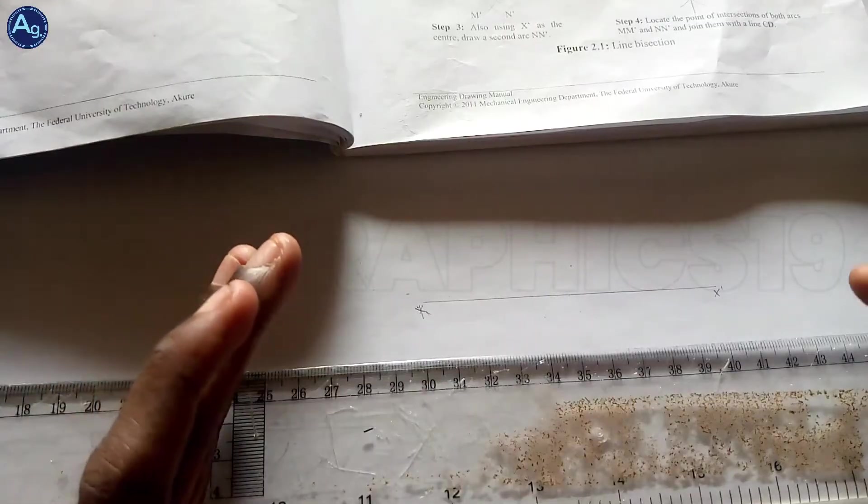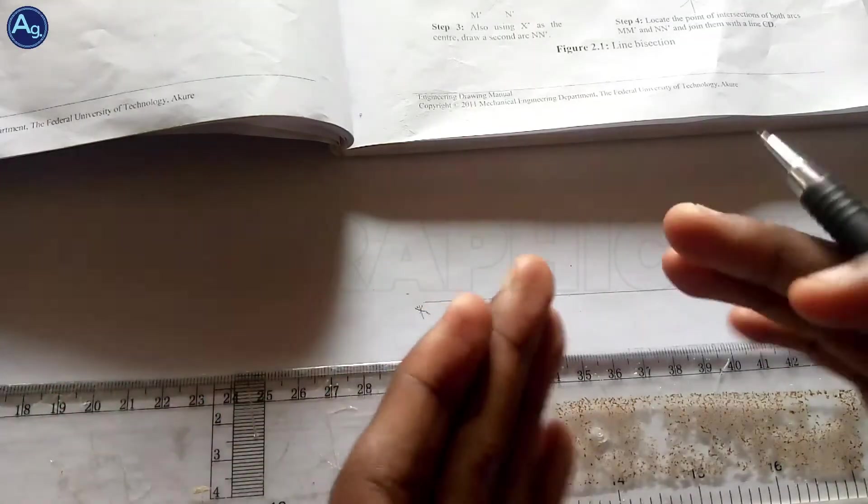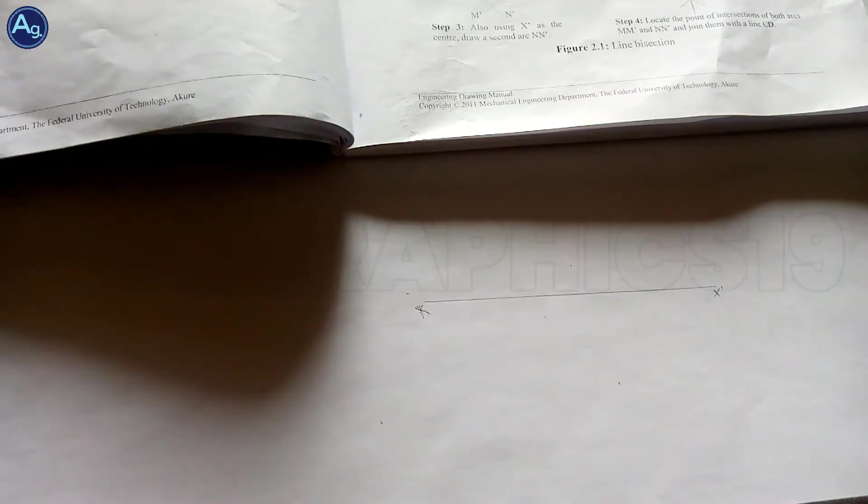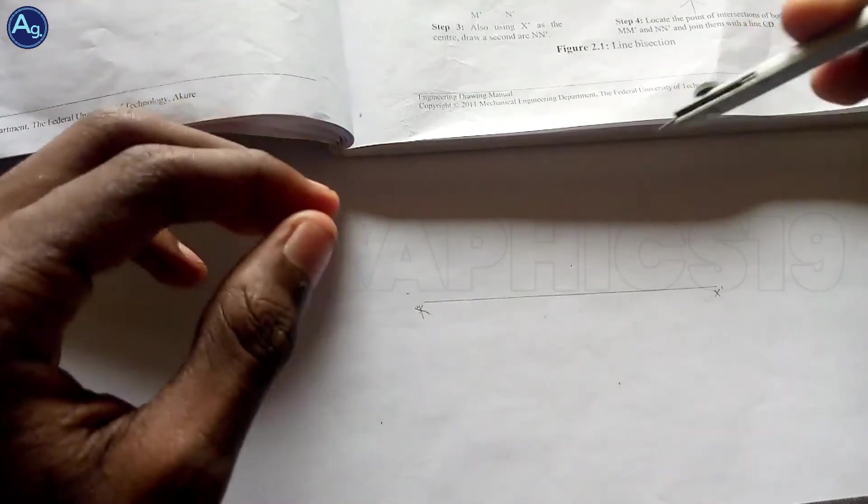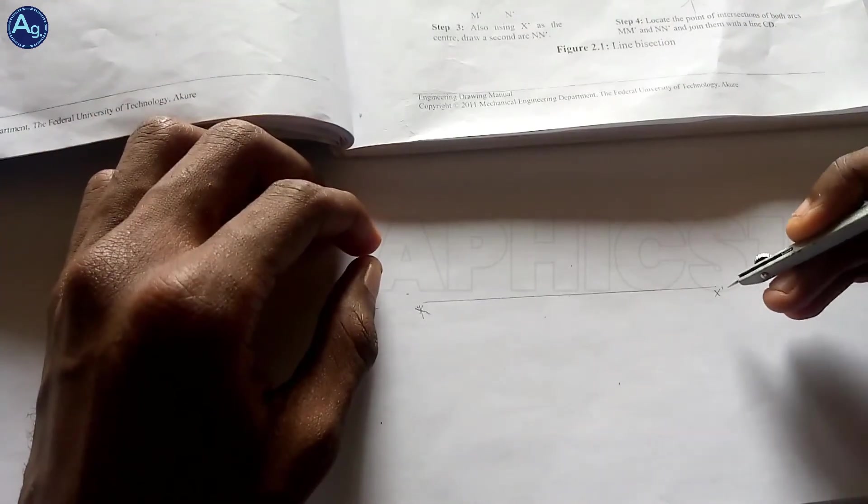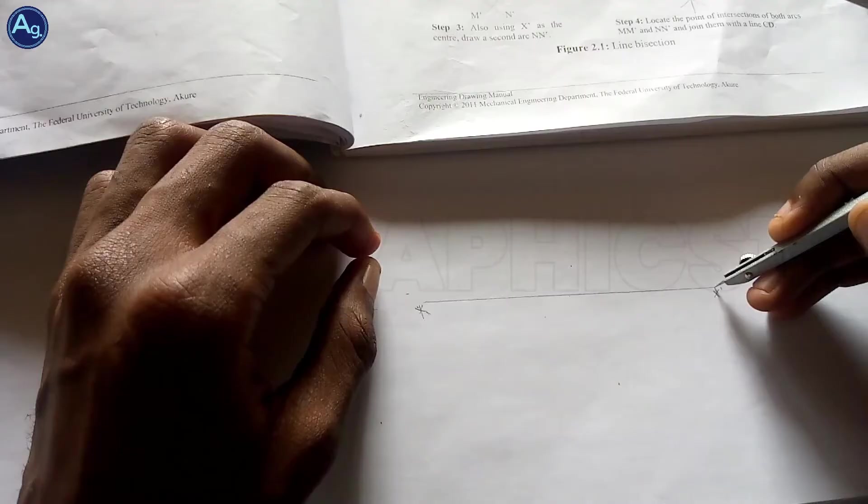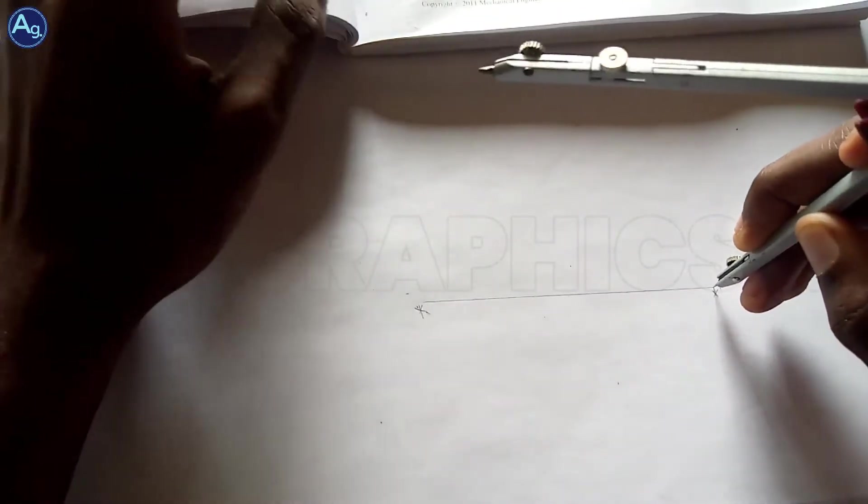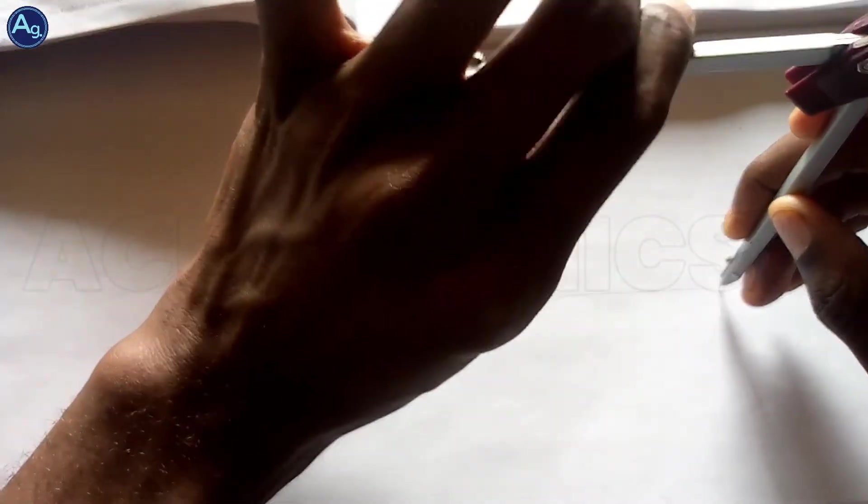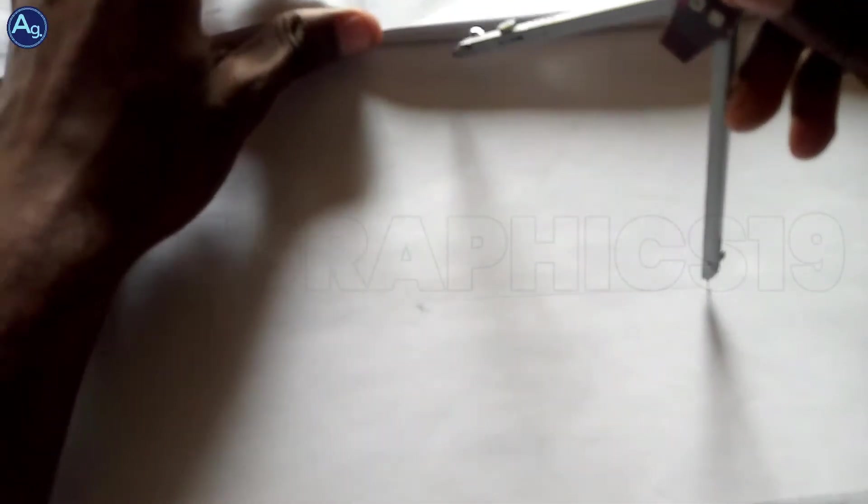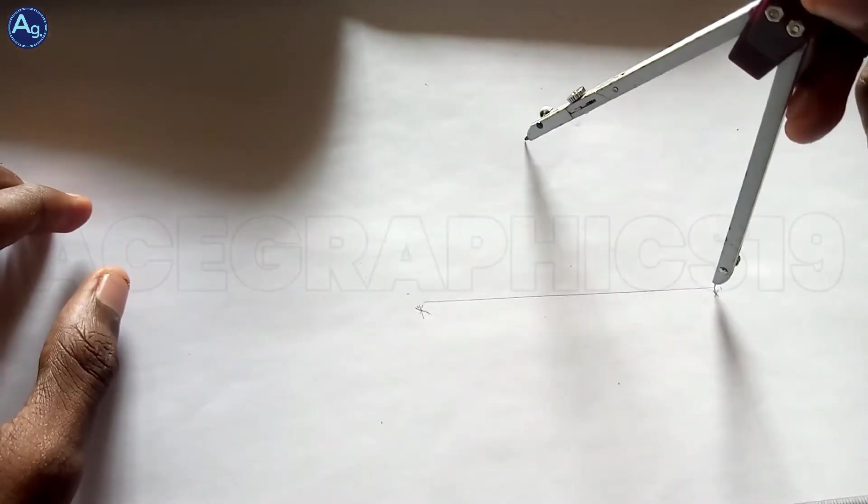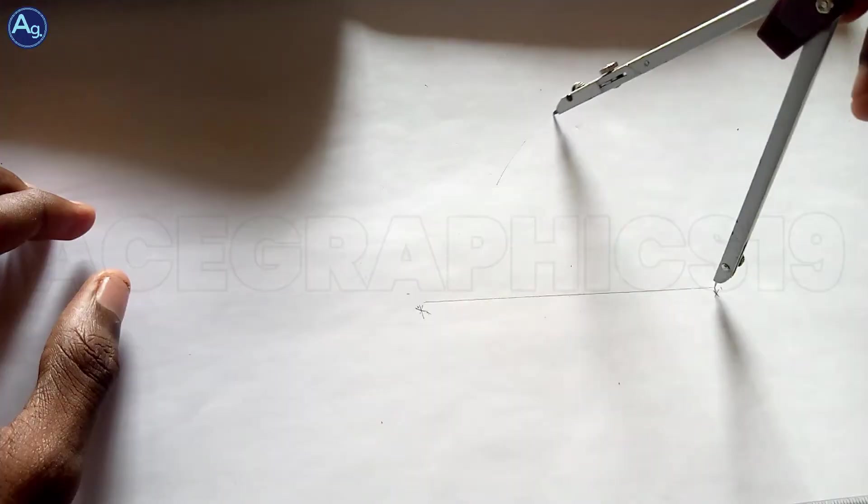We want to bisect these lines now and we don't know the center. First of all, we place this at one end at any radius and we just draw an arc.